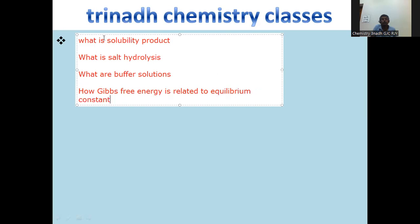How Gibbs free energy is related to equilibrium constant? Gibbs free energy is related to equilibrium constant as delta G0 equals minus RTln K, where K is the equilibrium constant.